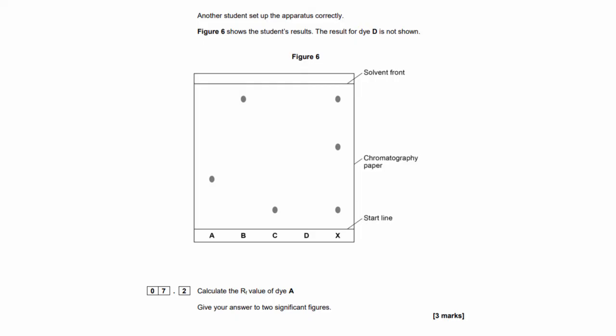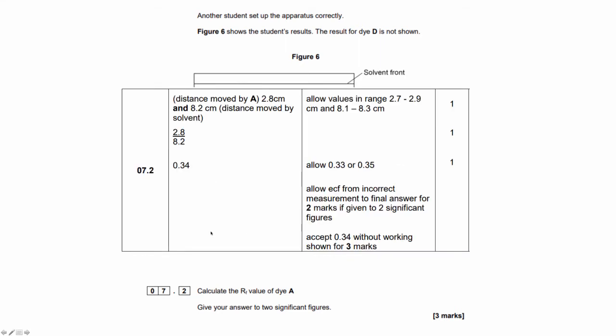Another student set up the apparatus correctly. Figure 6 shows the student's results. Calculate the RF value of A. Now to do this, we measure from the centre of spot A to the start line in centimetres, and then divide that by the distance from the solvent front to the start line in centimetres. Now the actual values that you obtain will depend on the size of the image on the screen, but because it's a ratio, the RF value should be the same. So you should have got 0.34.